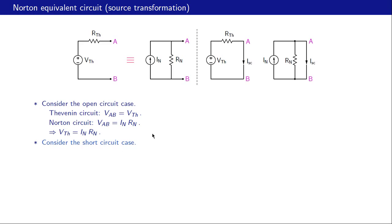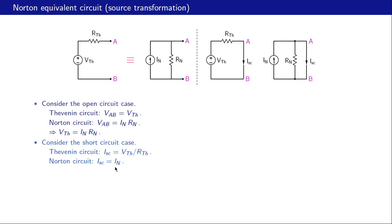Next let us consider the short circuit case. We connect a and b with a wire and look at the short circuit current i-sc for both equivalent circuits. For the Thevenin circuit, i-sc is simply v-th divided by r-th. For the Norton circuit, the voltage across a-b is zero, so no current flows through r-n, and therefore i-n must flow through the short circuit, giving i-sc equal to i-n. Since the two circuits are equivalent, these short circuit currents must be equal.